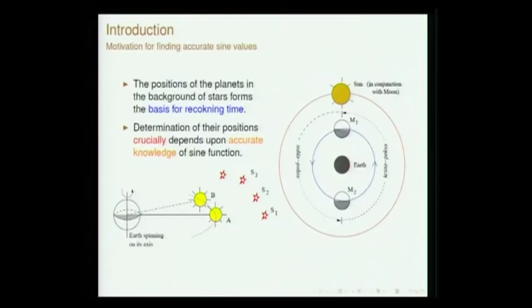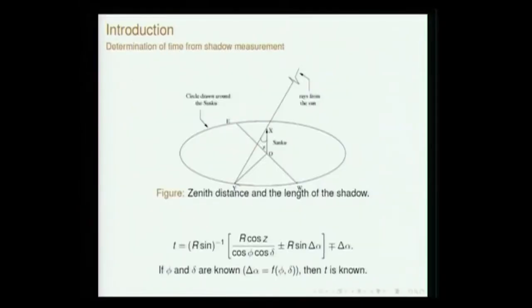The sine function is crucial because the computation of time — whether it is masa, varsha, dina, tithi — is crucially dependent upon planetary positions. We say one year is over because the sun has returned to the same position, one month is over because the moon has come back once again in conjunction with the sun. All this crucially depends upon the accurate computation of planetary positions, and the sine function appears in those calculations. Therefore, the sine function is extremely important for determining time itself.